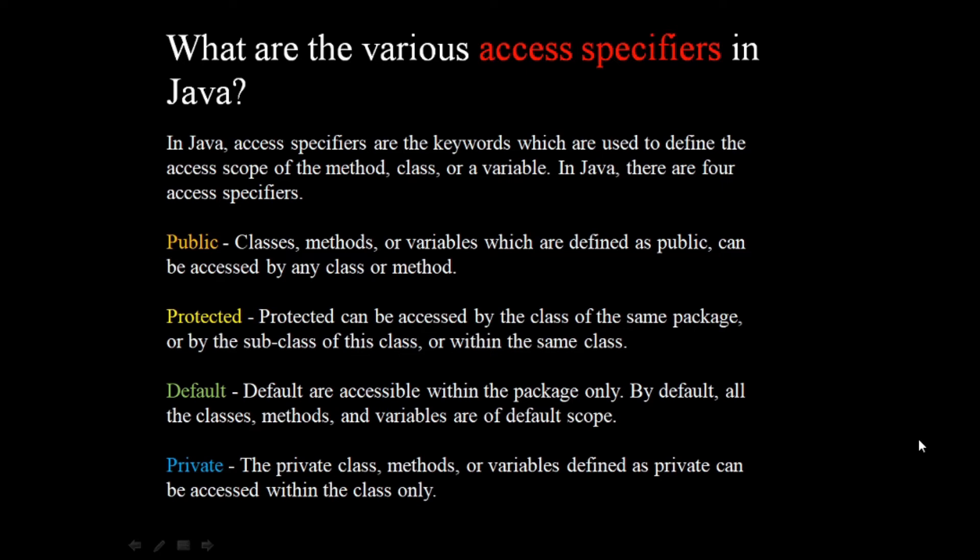Coming on to the third access specifier, which is default. If we do not denote any access specifier, then by default it takes the default access specifier. The default access specifier means the method, class, or variable can be accessible within the package only. By default, all classes, methods, or variables are of default scope unless we add a specifier like public, protected, or private.